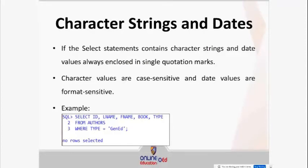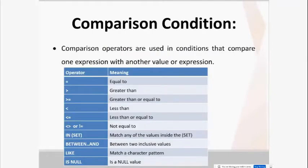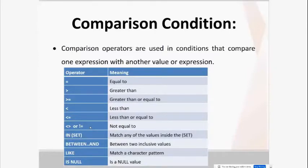Comparison operators are used in conditions that compare one expression with another value or expression. These include: equal sign, greater than, greater than or equal to, less than, less than or equal to, and not equal to — which can be written using the less-than and greater-than signs, or an exclamation point with an equal sign.